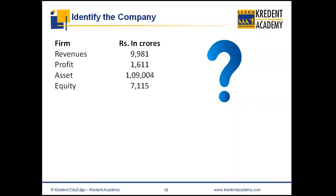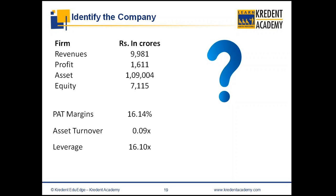The last example: a firm with revenue of 10,000 crores, profit of 1,600 crores, an asset base of 1,10,000 crores, and equity of 7,000 crores. The PAT margin is 16%, asset turnover is only 0.1 times, leverage is 16 times, and the average ROE is 25%. Try to focus especially on the leverage of 16 times.